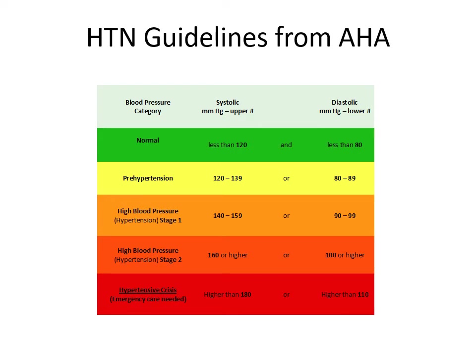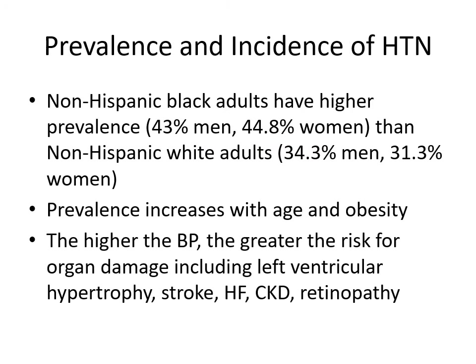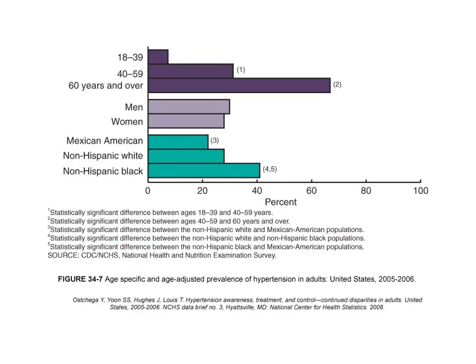Here you can see the cutoffs for different blood pressure levels. Looking at prevalence and incidence: non-Hispanic black adults have higher prevalence — 43% men and 44.8% women — than non-Hispanic white adults at 34.3% men and 31.3% women. Prevalence increases with age and obesity. The higher the blood pressure, the greater the risk for organ damage, including left ventricular hypertrophy, stroke, heart failure, chronic kidney disease, and retinopathy. Age-specific data shows hypertension is very common in the elderly, slightly higher in men, lower in Mexican Americans and higher in non-Hispanic black Americans.